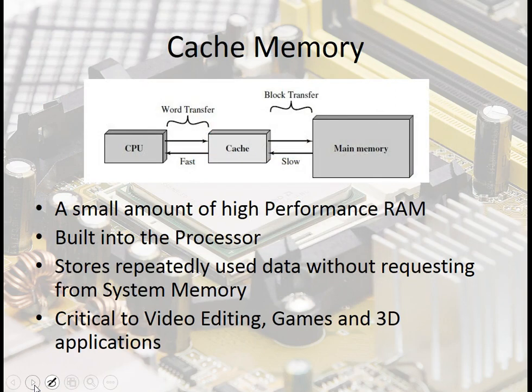Then we've got cache memory. This is a small amount of high-performance RAM built into the processor. It stores repeatedly used data without requesting it from system memory. In the normal fetch-execute cycle the CPU sends an address to fetch information from memory, but with cache memory it doesn't need to do that, saving time. This is critical to video editing, games, and 3D applications.